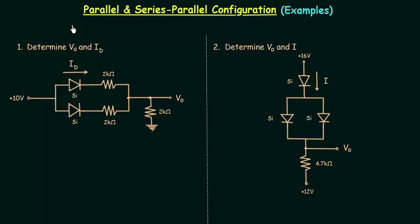In this lecture I will solve two problems. In the first problem we need to determine V0 and ID. V0 is the voltage across this resistance and ID is the current flowing through this diode.